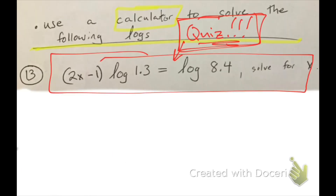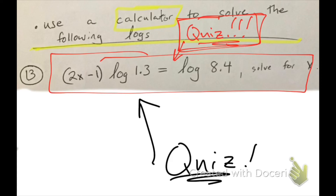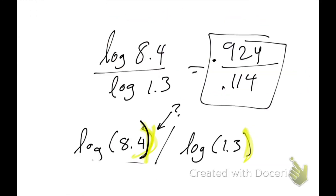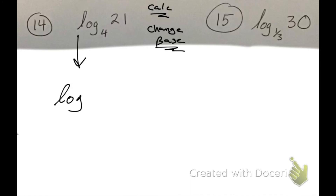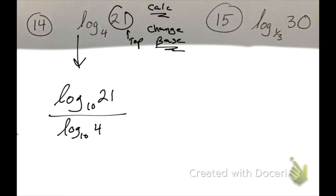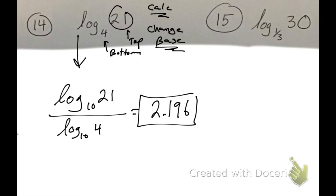Question 14: again use your calculator. This is where you change the base. I'm going to rewrite this using the change-of-base formula — log base 10 of 21 divided by log base 10 of 4. When you enter that into your calculator, that gives you 2.196.